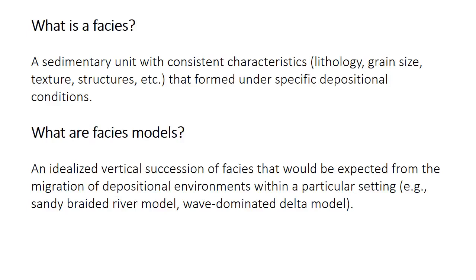A FACES model is a group of multiple FACES combined into an idealized vertical succession that represents the migration of depositional environments within a particular setting. For example, in a braided river there can be a channel bottom environment, a bar environment, the overbank environment, and so forth. Each of those environments would create a characteristic FACES, because the current velocity and water depth differs, which leads to different grain sizes and bedforms, as you've learned previously.